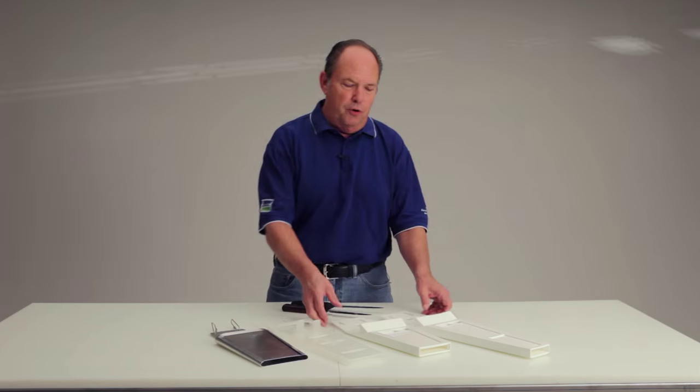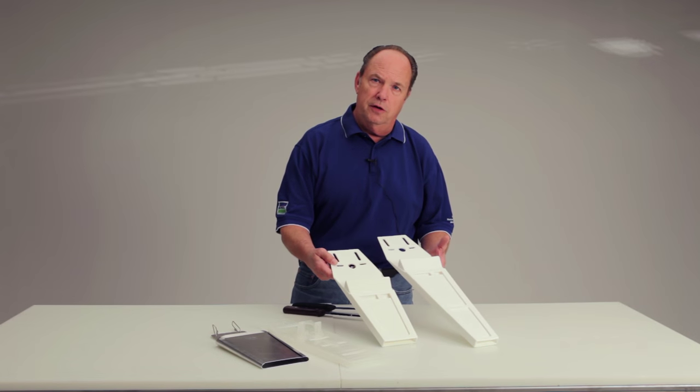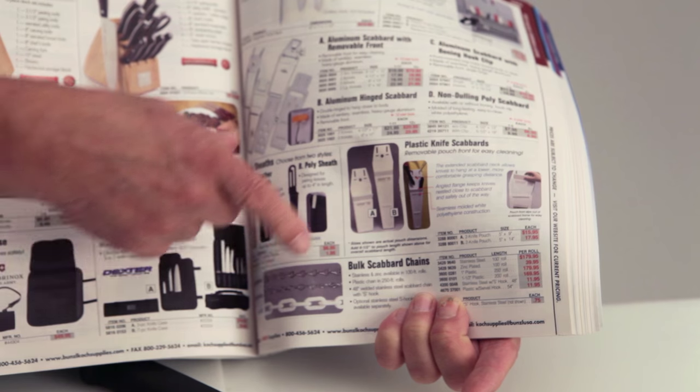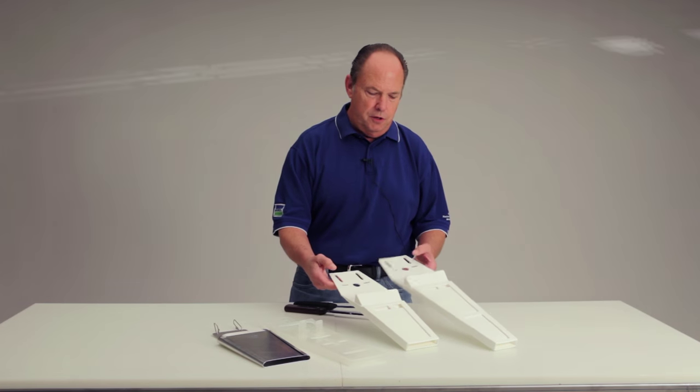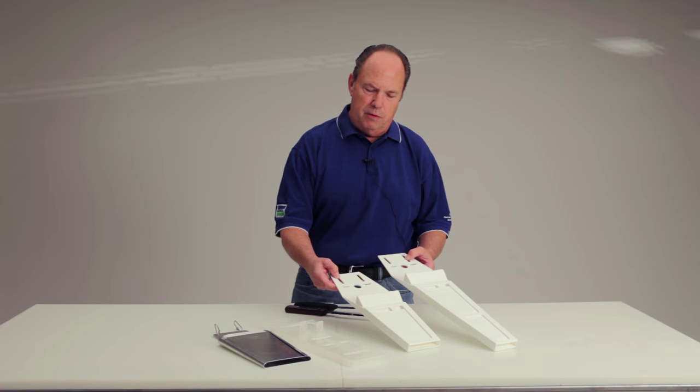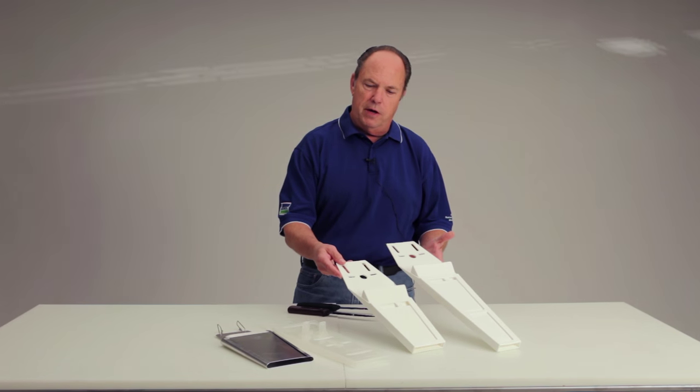One thing that's important to note is there's two styles of scabbards located in the Bunzel catalog. A long version and a short version. Both have the removable fronts. Both have the attachments for scabbard chains. They both hold the same amount of knives.